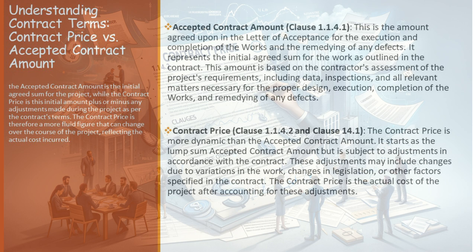Now, let's consider the practical implications of these terms. As a contractor, understanding the difference between the accepted contract amount and the contract price is crucial for your financial planning. It helps you anticipate potential changes in costs and prepare accordingly. For project managers and other stakeholders, this knowledge ensures that you're aware of the financial dynamics of the project and can manage expectations and budgets more effectively.